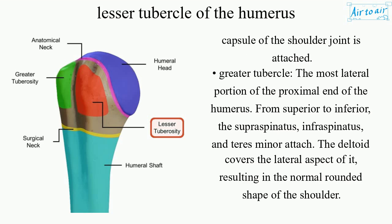Greater tubercle. The most lateral portion of the proximal end of the humerus. From superior to inferior, the supraspinatus, infraspinatus, and teres minor attach. The deltoid covers the lateral aspect of it, resulting in the normal rounded shape of the shoulder.